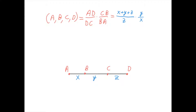Today we're going to learn about the cross ratio. We have a cross ratio when we have four points on one line, such as here — a, b, c, and d lie on a straight line — and we call the cross ratio the following ratio: AD divided by DC times CB divided by BA, and we denote it like this.